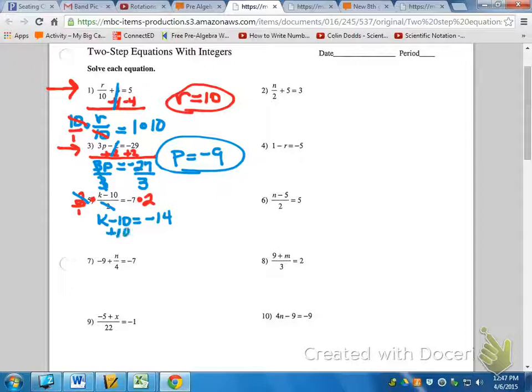We write down K, the 10s cancel out, equaling... I'm $14 in the hole, but I've earned 10 today, so negative 4. K equals negative 4.